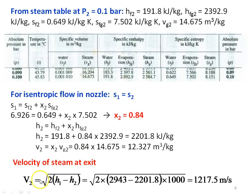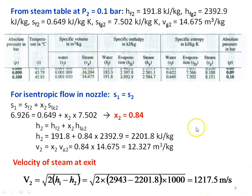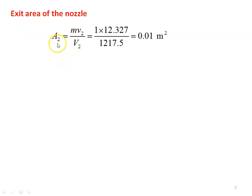Now the exit velocity of the steam: V2 equal to square root of 2 into (H1 minus H2), which is square root of 2 into (2943 minus 2201.8) into 1000 to convert kilojoules to joules per kilogram. The velocity is 1217.5 meters per second. The exit area of the nozzle from the continuity equation: A2 equal to M times specific volume V2 divided by velocity V2, which is 1 into 12.327 divided by 1217.5 equal to 0.01 meter square.